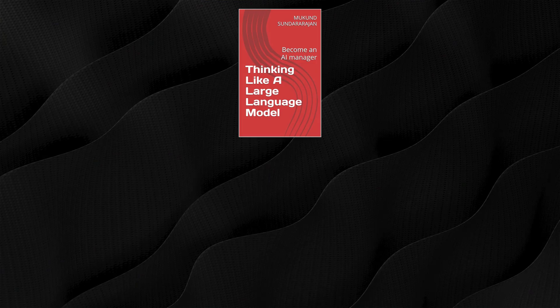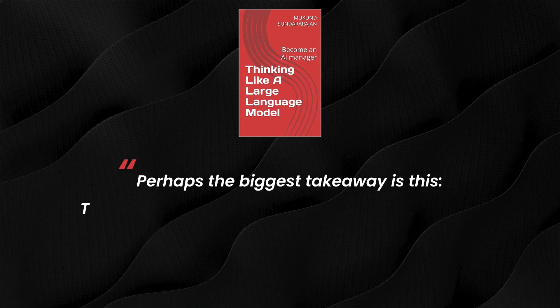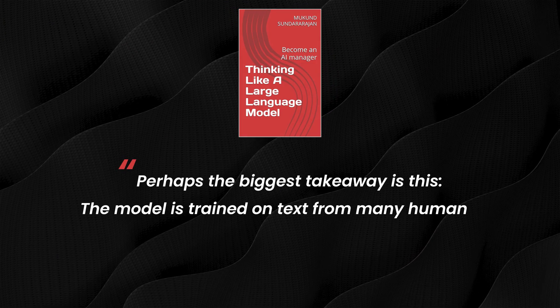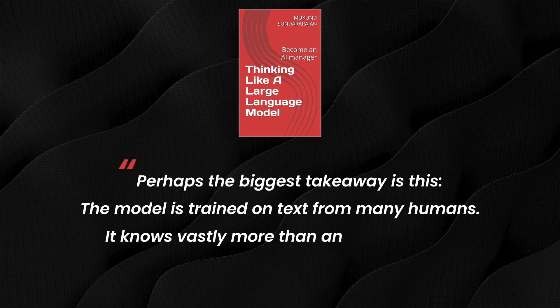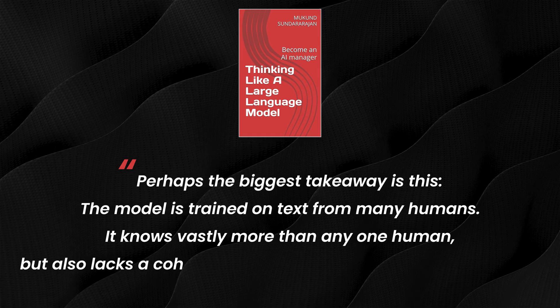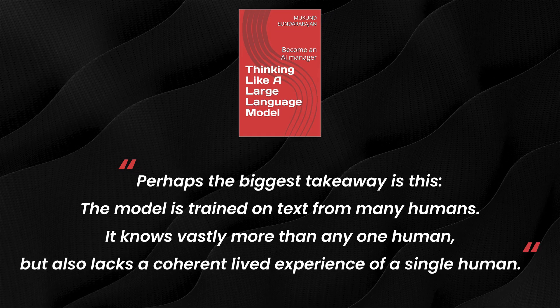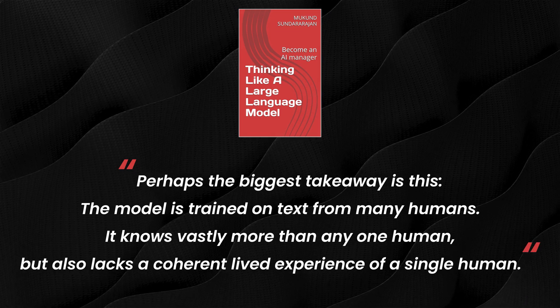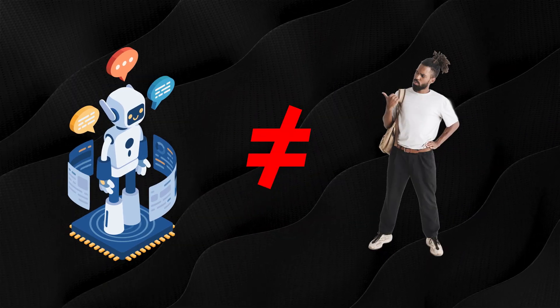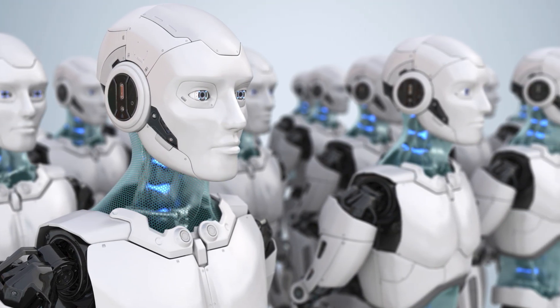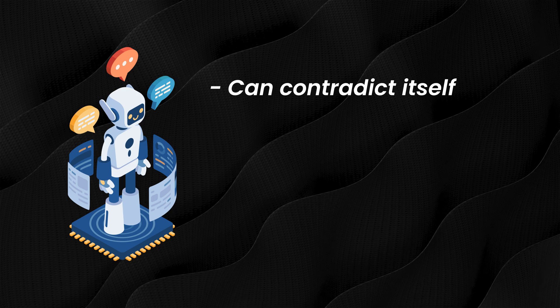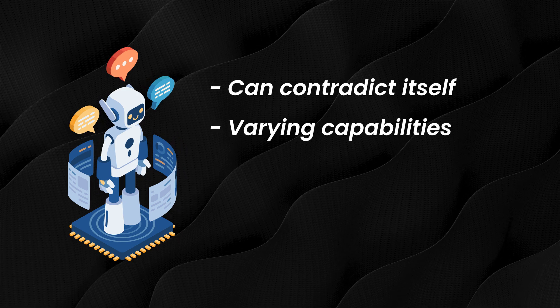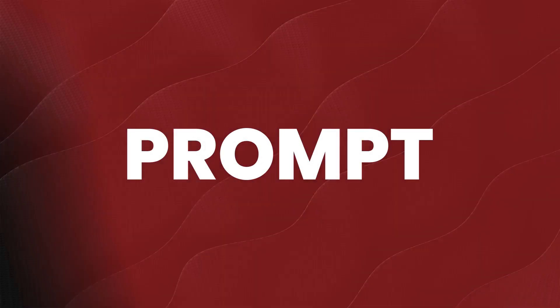One framing from the book I liked was perhaps the biggest takeaway: the model is trained from many humans. It knows vastly more than any one human, but also lacks the coherent lived experience of a single human. So instead of thinking of the LLM like a human, think of it as a bunch of entities that vaguely resemble humans. That means the LLM could contradict itself or have varying capabilities based on how you're prompting it. LLMs are using billions of examples of human writing and thinking as a way to do pattern recognition and prediction.